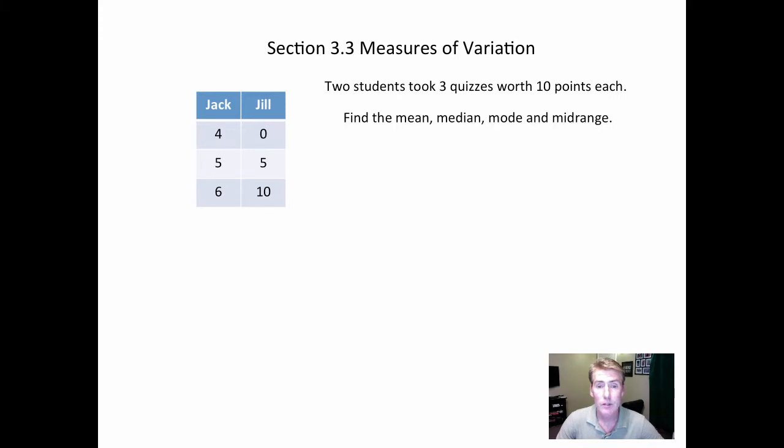Let's review some of the things we've just learned recently. Find the mean, median, mode, and midrange. The mean: add three scores, divide by three. When you do that, you'll find that each of them has a mean of five. The median: put them in order and whatever score is in the middle, which for both of them is this five, so the median is five for each of them.